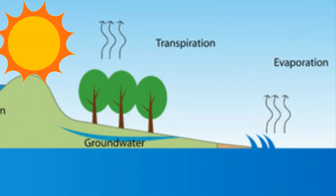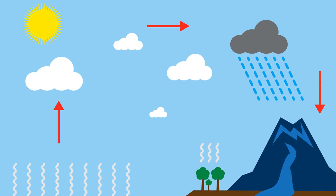Let's first recall how rain is formed. Water from the water bodies evaporates using the sun's heat and becomes water vapor. This water vapor rises from the earth's surface and goes into the atmosphere, where it collects in a particular region and becomes denser to form clouds. When cool air reaches these clouds, water droplets are formed.